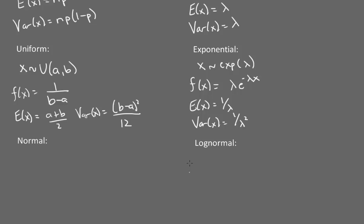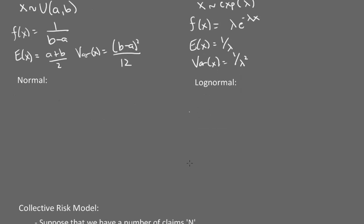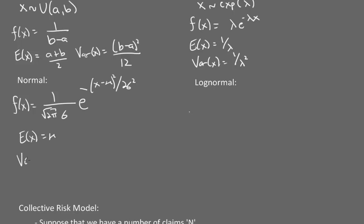The final two distributions are the normal and log-normal. The normal density is (1 / (sqrt(2π)·sigma)) · e^(−(x−mu)² / (2·sigma²)). The mean is equal to mu and the variance is equal to sigma squared.